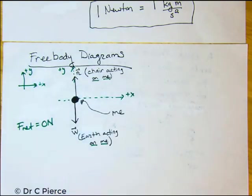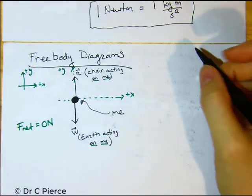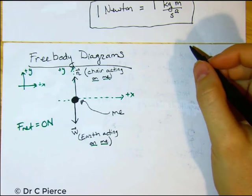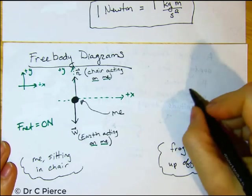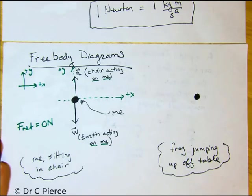And that's our first free body diagram, our first force diagram. How about we do another one? How about a frog in the process of jumping upwards off the table? We draw a dot for the frog.